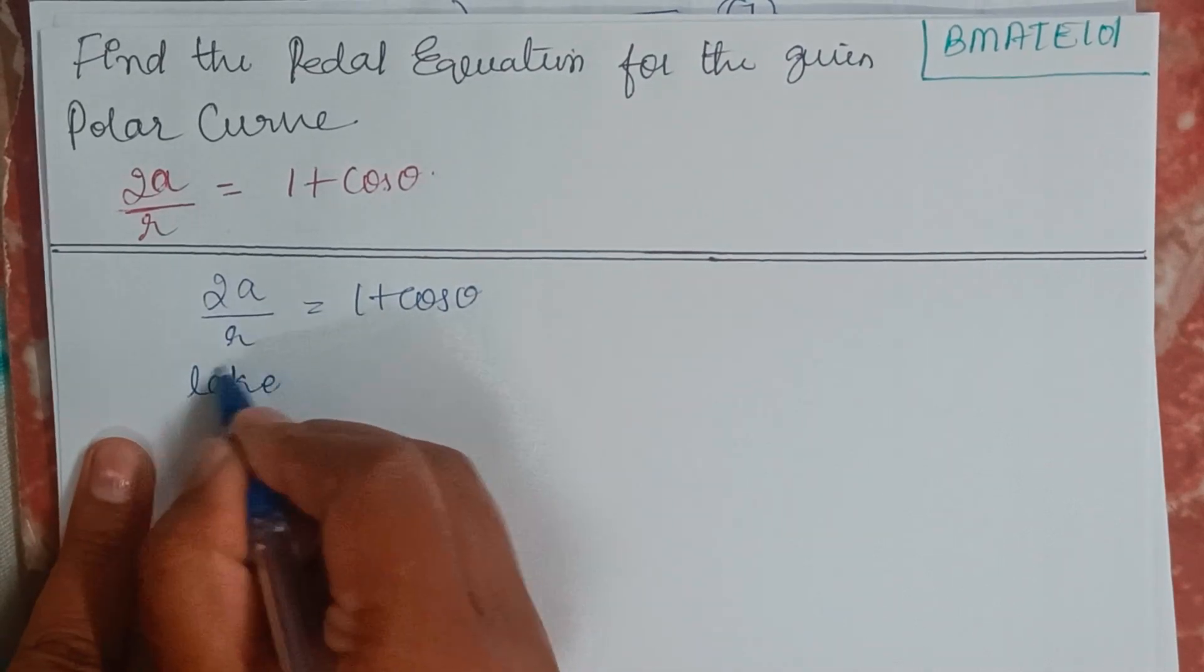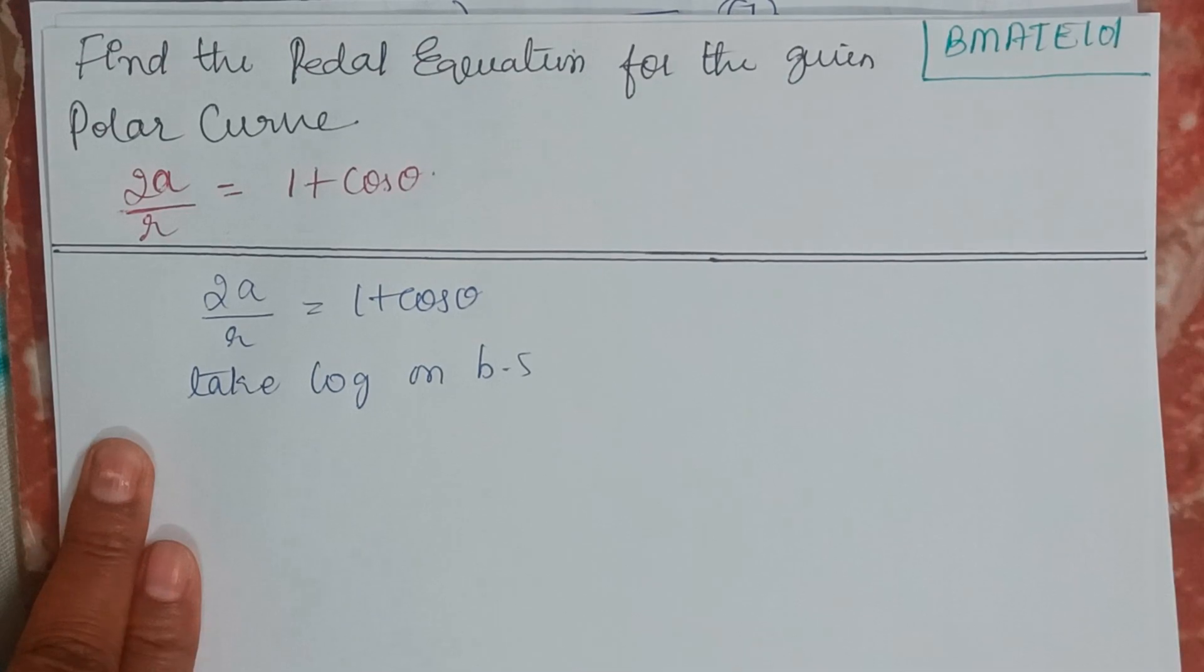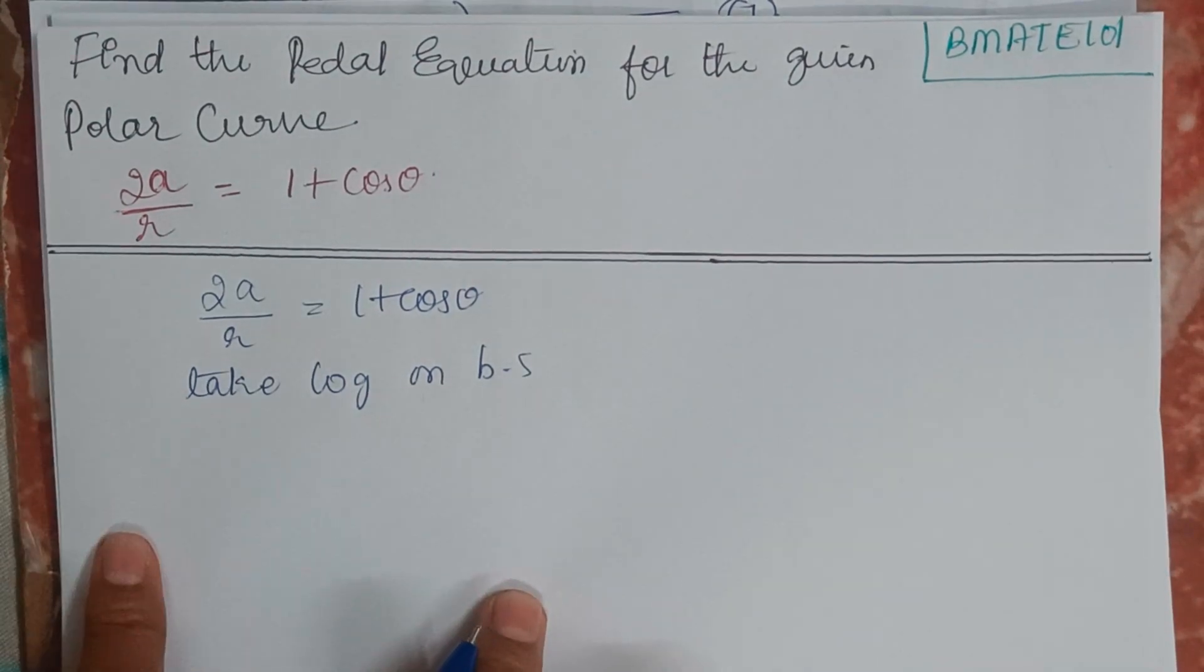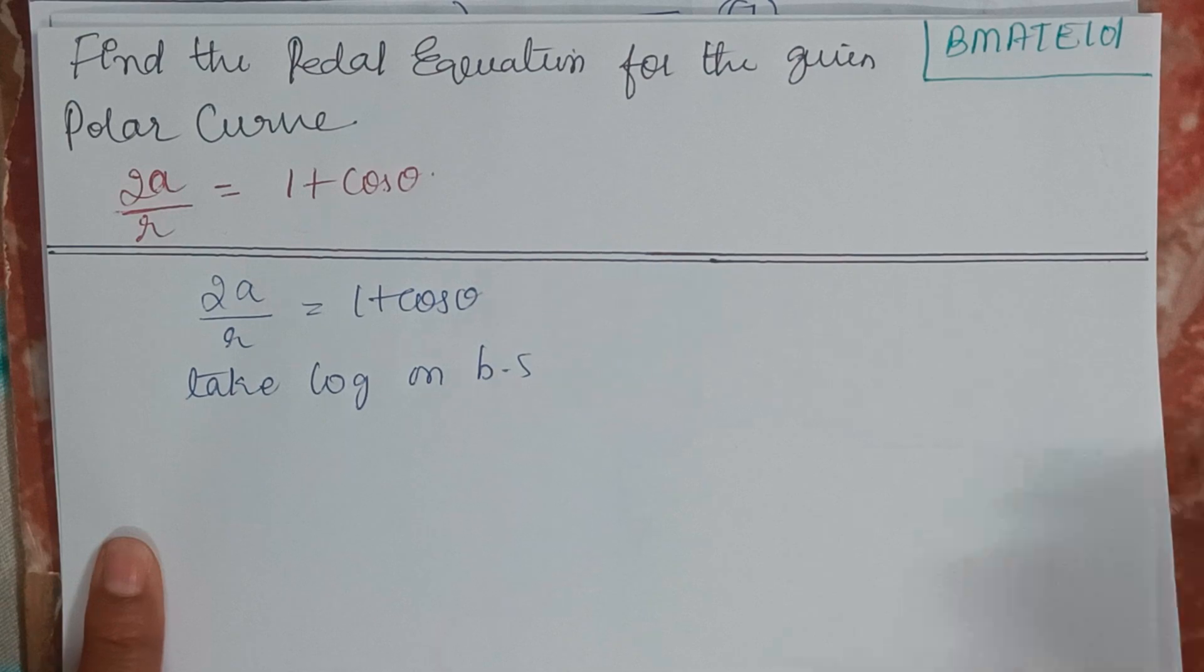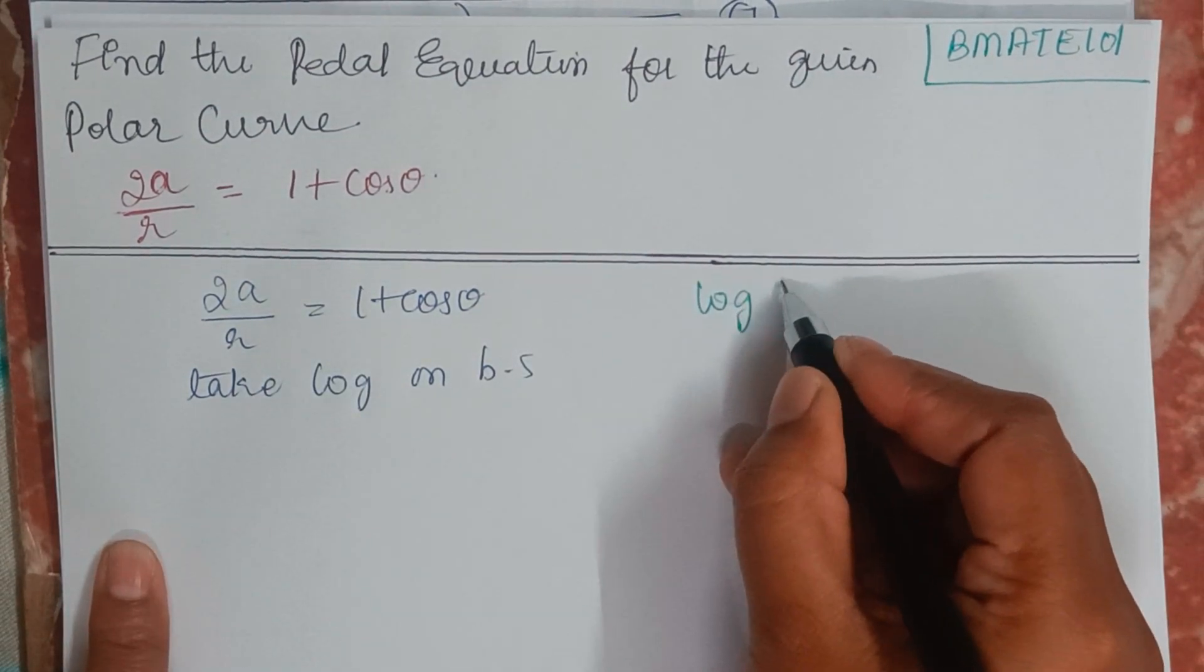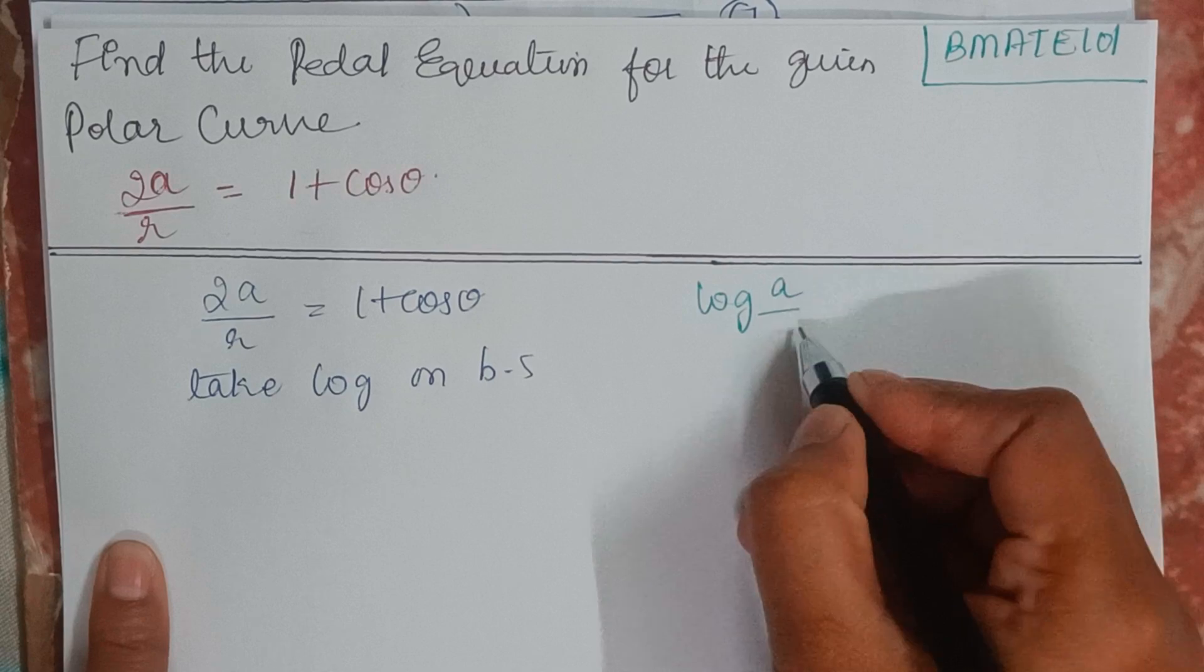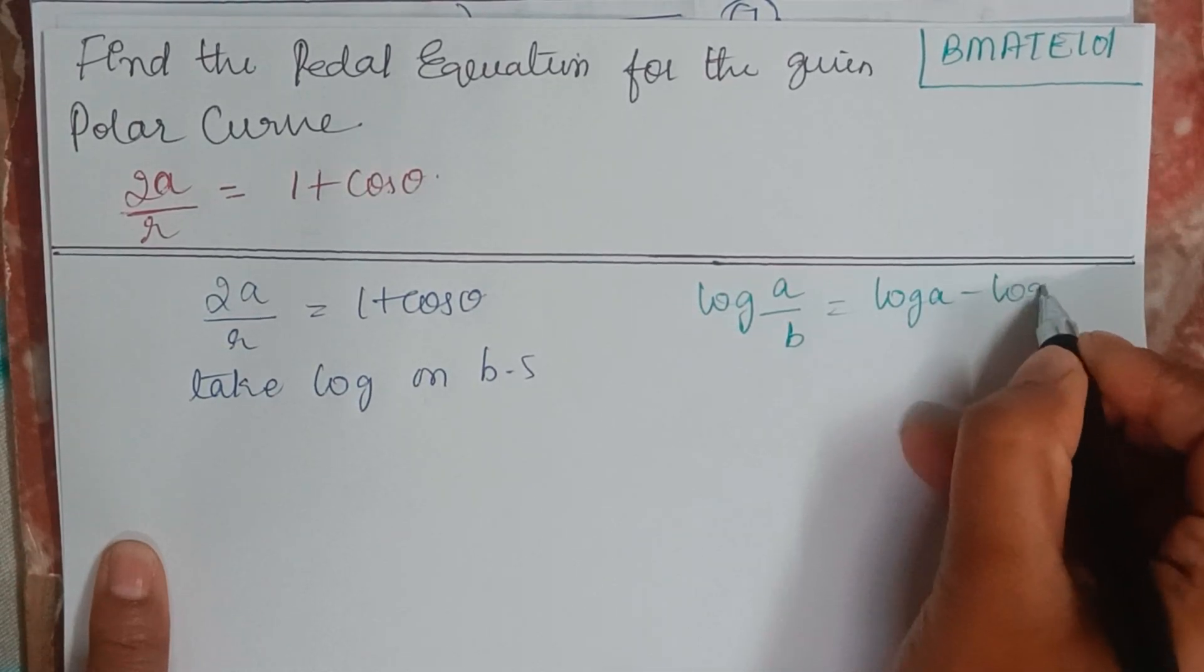We will take log on both sides. So this is the very first thing we do. If you know log A by B formula, I'll write it here. Log A by B is nothing but log A minus log B.